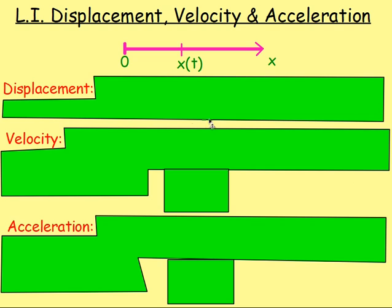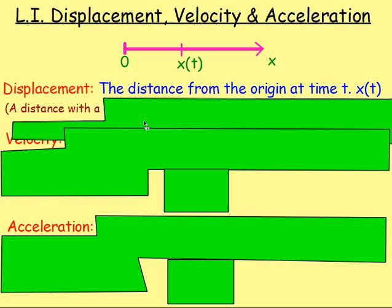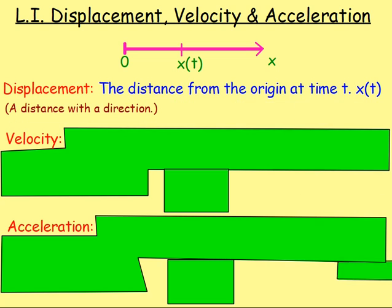First of all, what is meant by these three words? Well, displacement — if you have an object and it starts to move, it will be moving away from its starting position. So the displacement is the distance from the origin, from the starting point, at time t. Displacement is a vector and it's really the distance with a direction.